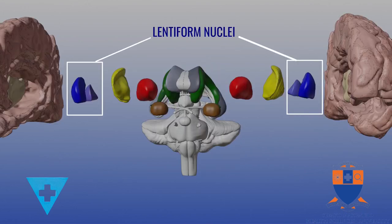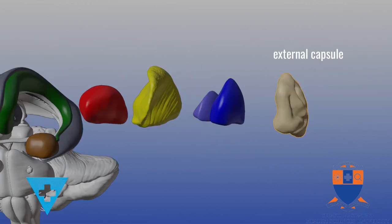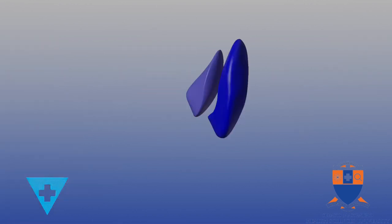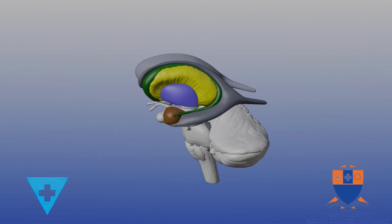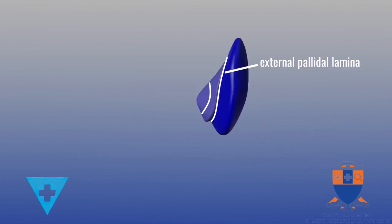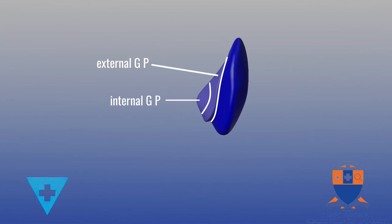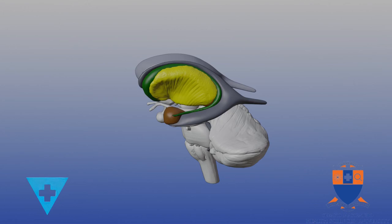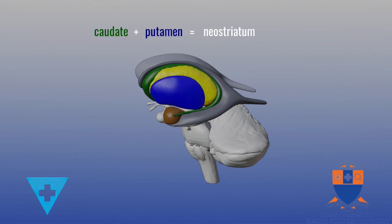Next up is the lentiform nucleus. This lens shaped nucleus is between the external and the internal capsules. It has two parts, the outer putamen and the medially located globus pallidus. Globus meaning sphere or ball, pallidum meaning pale, thus describing a pale ball. The external pallidal lamina divides the putamen and the globus pallidus. The internal pallidal lamina divides it into the external and the internal globus pallidus. The internal capsule connects the caudate lenticular grey stria to the lentiform and the caudate nuclei. Its striated look gives it the name corpus striatum. The globus pallidus is the paleostriatum and the caudate and putamen the neostriatum.